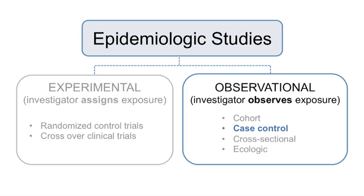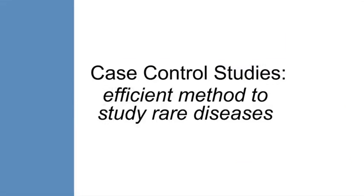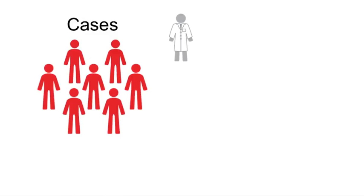Case control studies are an efficient and common epidemiologic study design to study rare diseases. The rule of thumb for this MOOC is that rare is defined as a prevalence of less than 10%. In a case control study, researchers begin by selecting diseased individuals, or individuals with the health outcome of interest. These are known as cases.